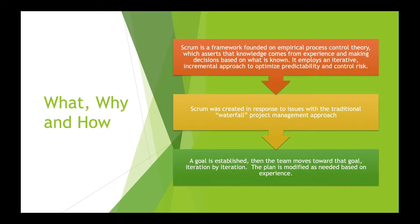Scrum is based on a concept called empiricism, which basically asserts that knowledge is gained by observation and experience. Scrum is a lightweight framework, not a predictive engineering process. It allows teams to determine the details of how they operate within the guidelines of the framework.